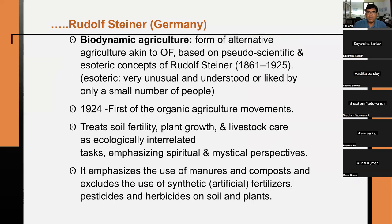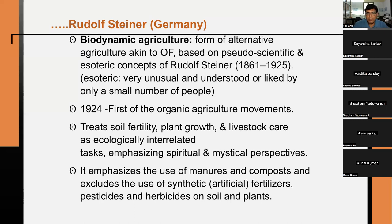Biodynamic agriculture is a form of alternative agriculture close to organic farming, but it is based on pseudo-scientific and esoteric concepts of Rudolf Steiner. These concepts lacked scientific basis, which is why it is called pseudo-scientific. Esoteric means very unusual and understood by only a small number of people — they do not appeal to the general public, only to disciples blindly following a certain belief.